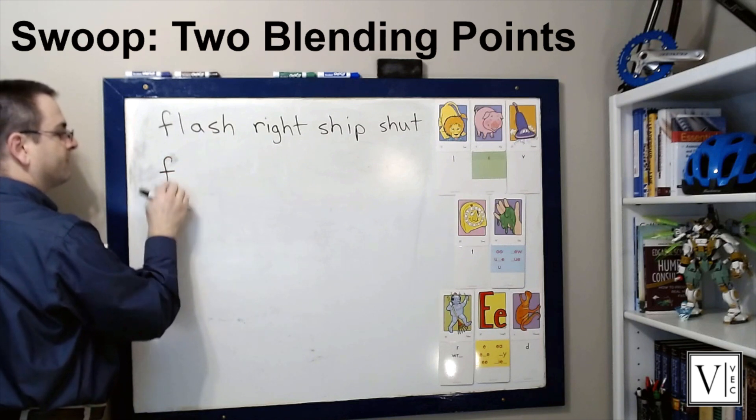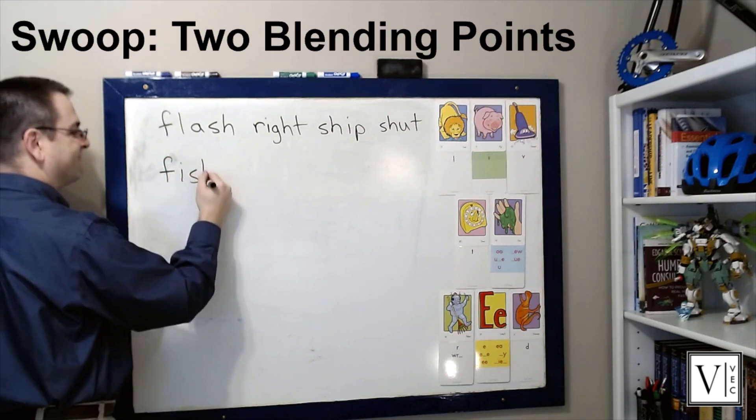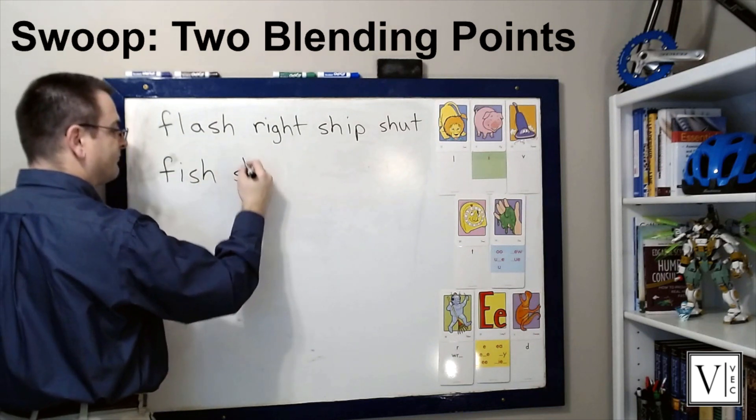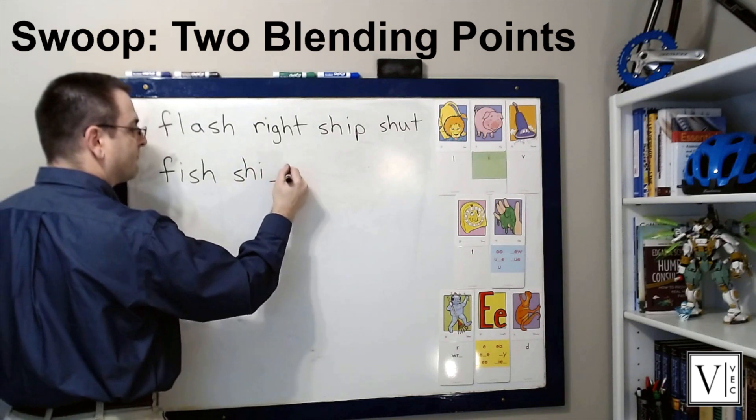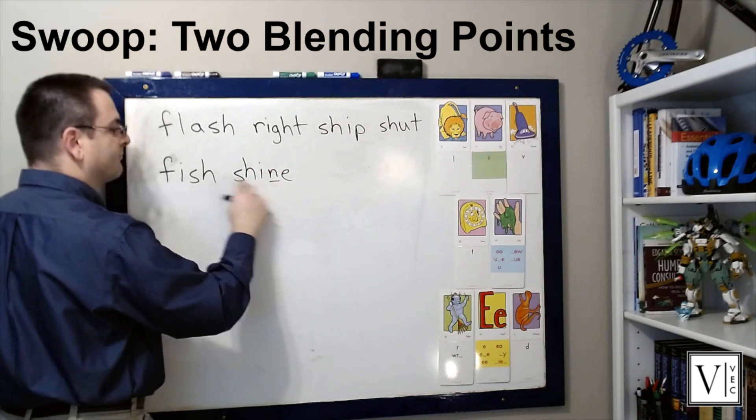Something else that you'll notice is that with single syllable words there are two places where you ask students to blend. The first point is when you hit the vowel, you ask students to blend from the onset or the beginning of the word through the vowel, and that's because the vowels are the most difficult parts of words for students to learn.